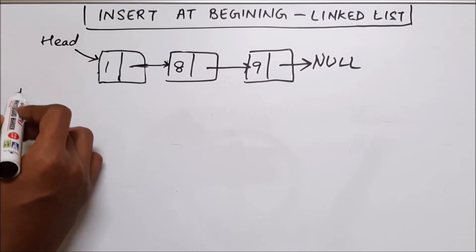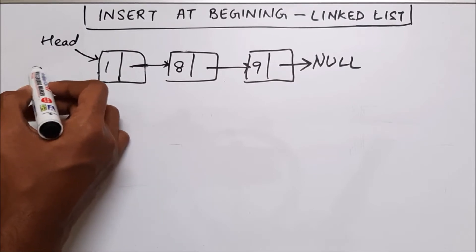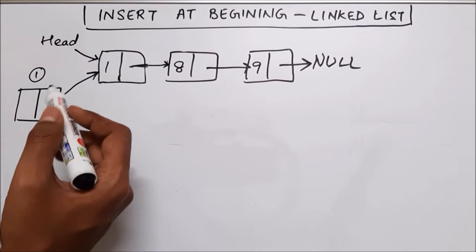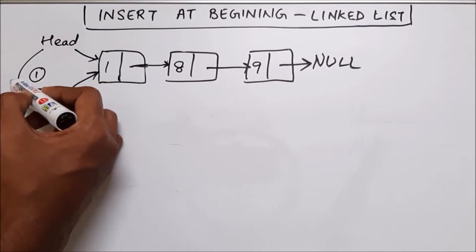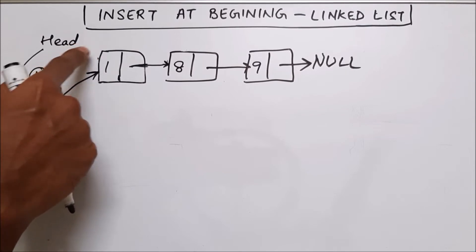So our required output will be a new node which will be the first node and it will be pointing to the entire linked list and this will be our new head. So this is the output which we require.